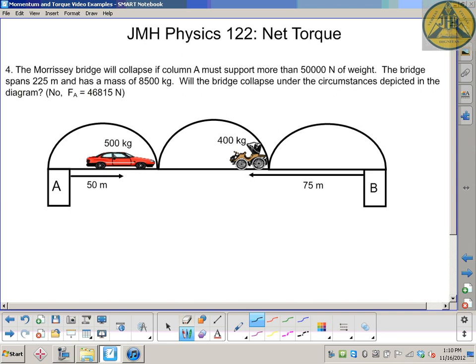Those numbers are made up, so don't go around telling people that's the actual mass of the bridge. Will the bridge collapse under the circumstances depicted in the diagram? You've got two vehicles - the red car is 500 kilograms, 50 meters from column A, and the old buggy is 400 kilograms, 75 meters from column B.